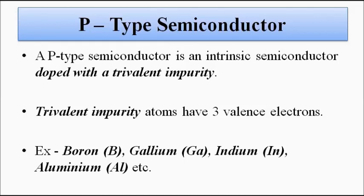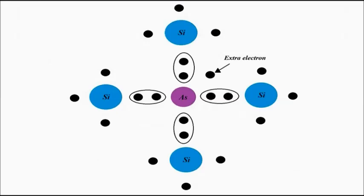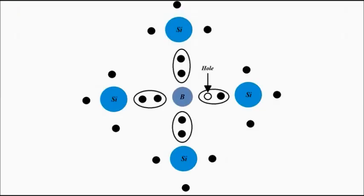This is how the formation of N-type and P-type semiconductors takes place. The same principles apply with germanium instead of silicon, or with any other pentavalent or trivalent impurity. I hope you liked this video. Please subscribe to my channel Engineering Tutorial for more videos related to engineering, science, and technology. Have a great day, thank you very much.